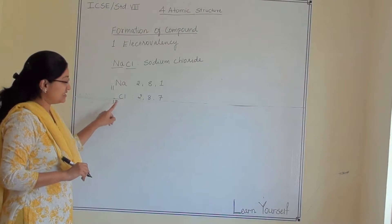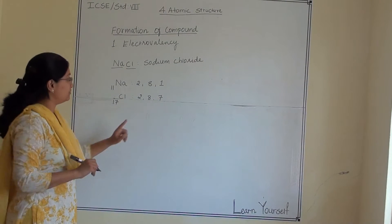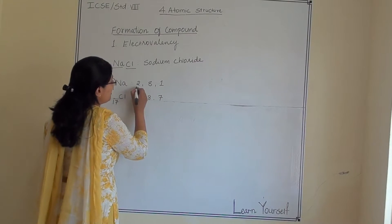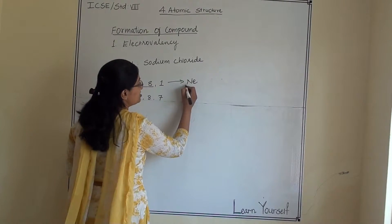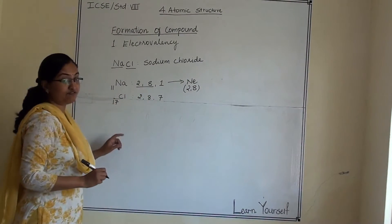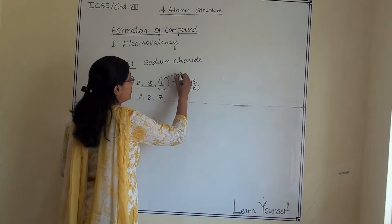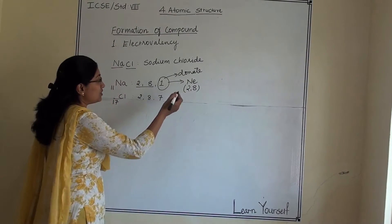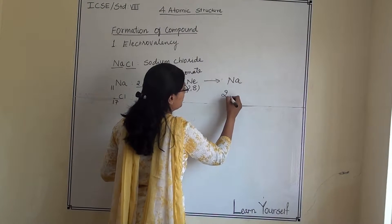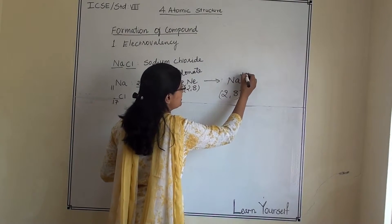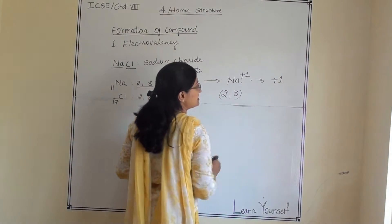Now for chlorine — its atomic number is 17 and its electronic configuration is 2, 8, 7. Sodium wants to be stable like neon, whose electronic configuration is 2, 8. So if sodium wants to be like neon, it has to donate its one outer electron. When sodium donates one electron, its new configuration becomes 2, 8, and it becomes Na⁺ — because the valency of sodium is plus one.